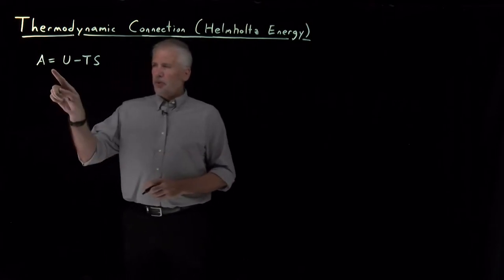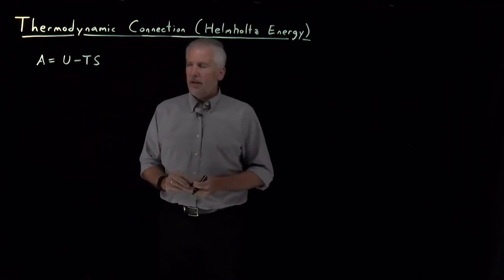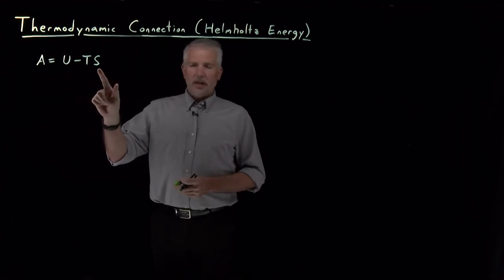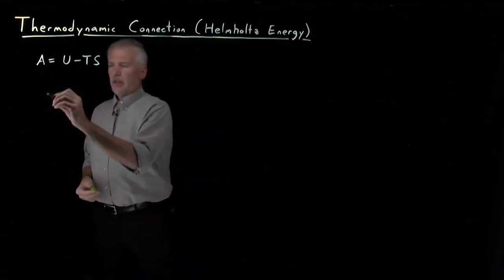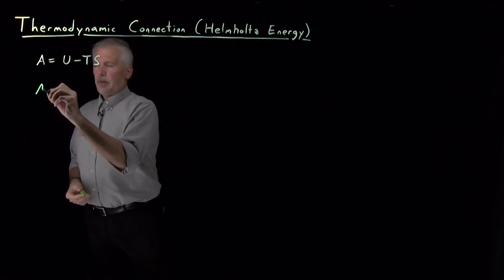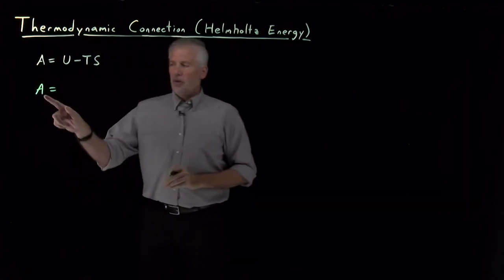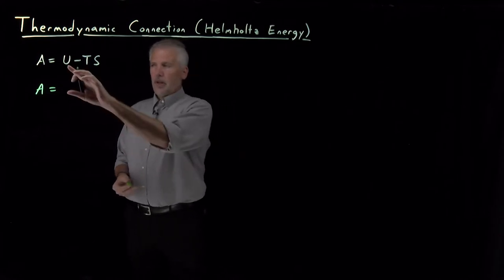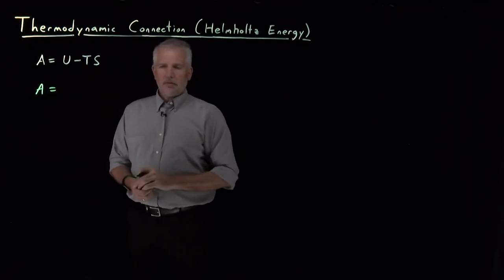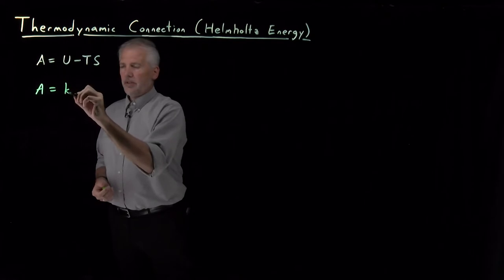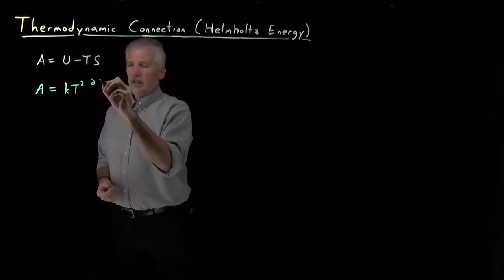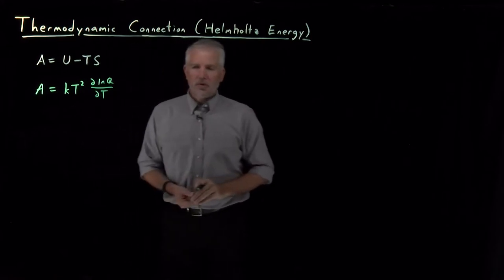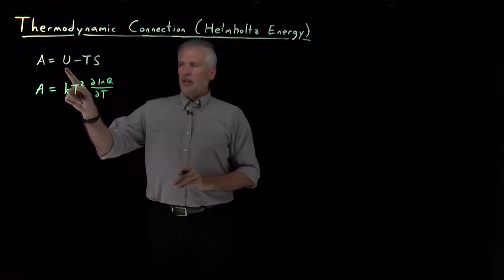That's particularly easy. At this point we have enough thermodynamic connection formulas for other quantities like the energy and the entropy that we can obtain the thermodynamic connection formula for the Helmholtz energy by using what we've had previously. So we know the thermodynamic connection formula for the energy is kT squared derivative of log Q, log of the partition function with respect to temperature. That's U.